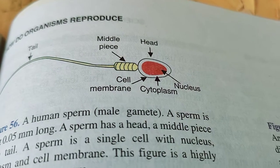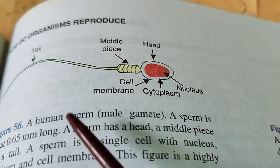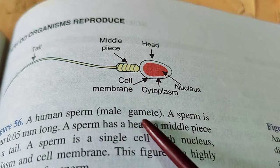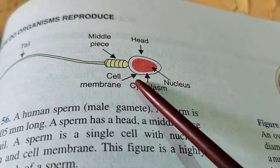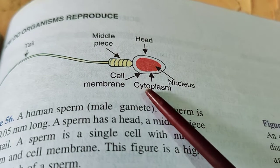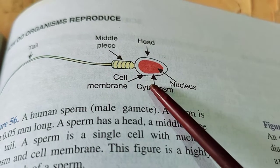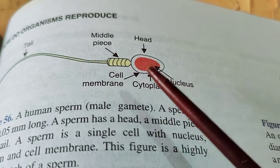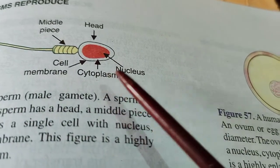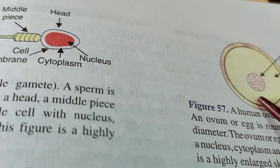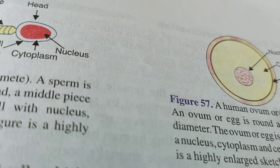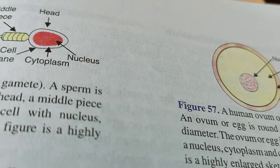The main role of the testes is to produce sperm — the human male gamete — and to support the growth and expression of the features of sperm. Sperm is the male gamete which finally fuses with the female gamete, that is the ovum or egg, during the process of fertilization.